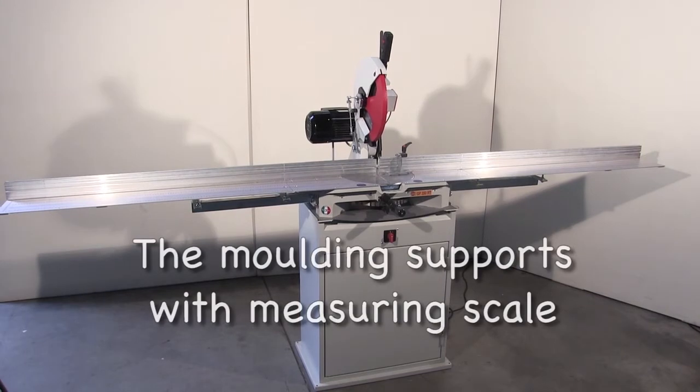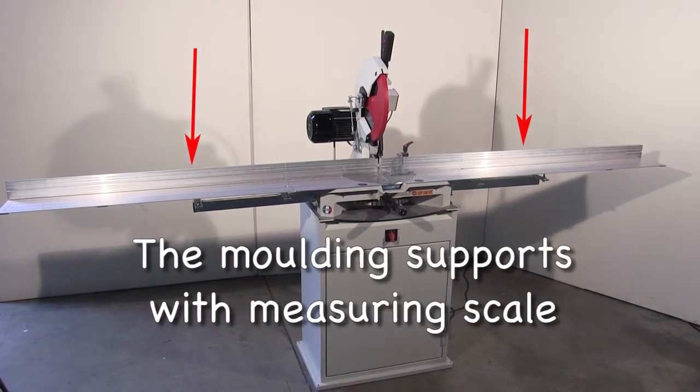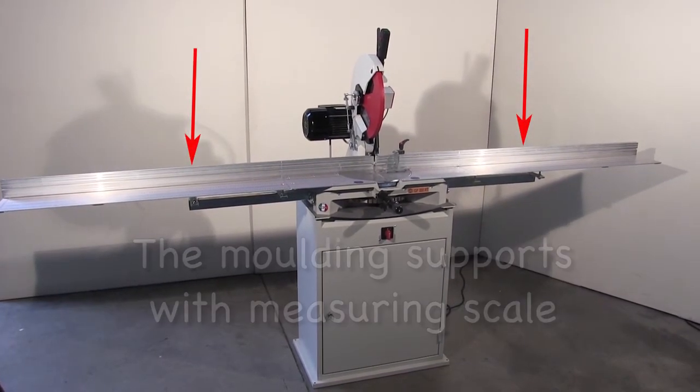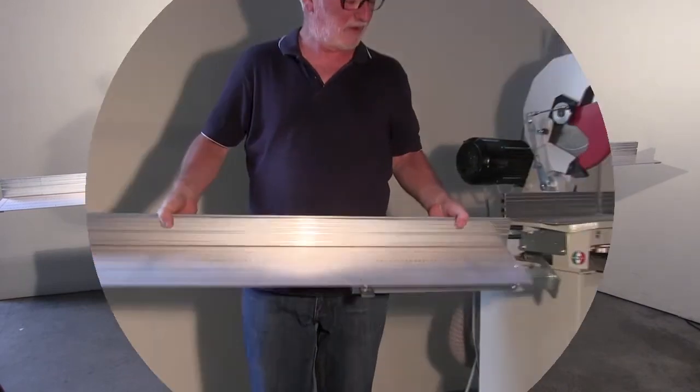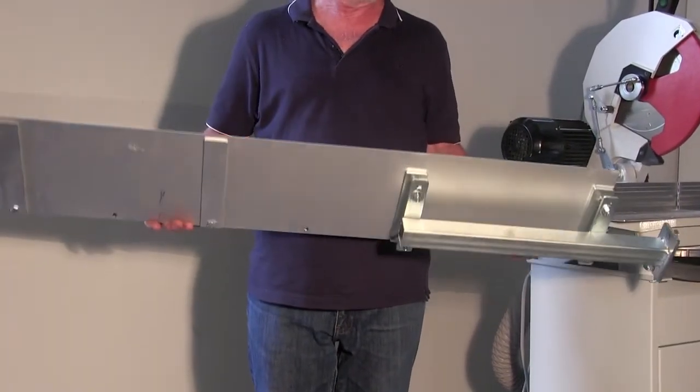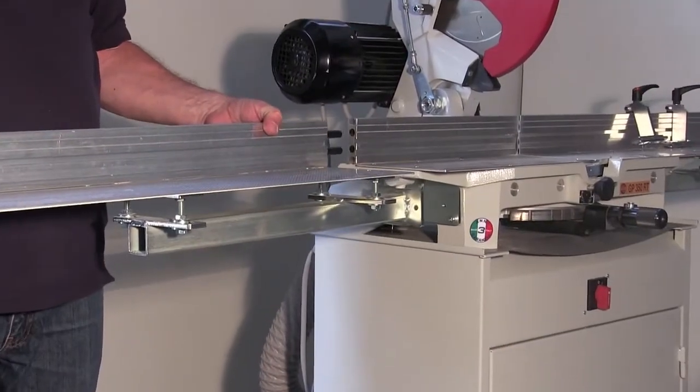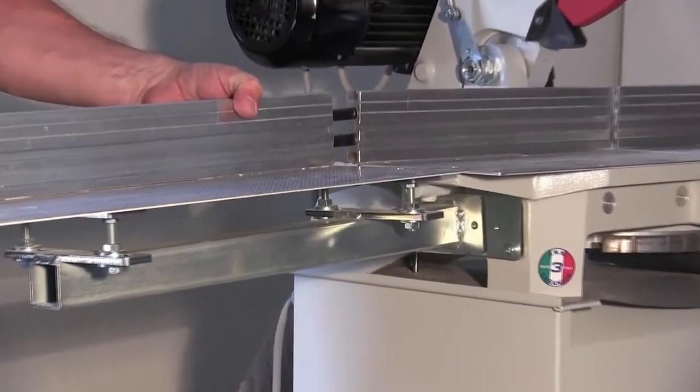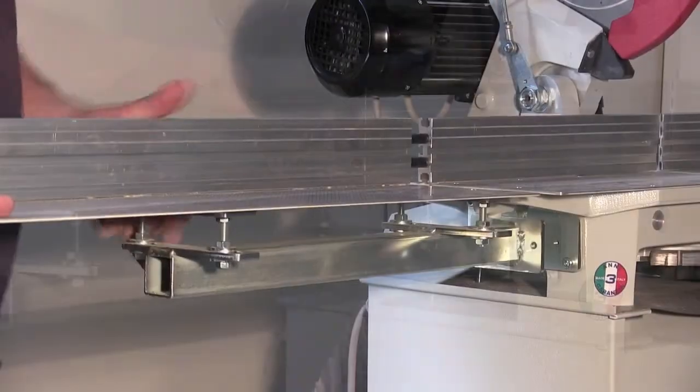The moulding supports increase the length of the table, bringing it to 152 cm from the centre. These are the moulding supports. They are 110 cm long. The moulding supports must be applied to the saw body in this way.